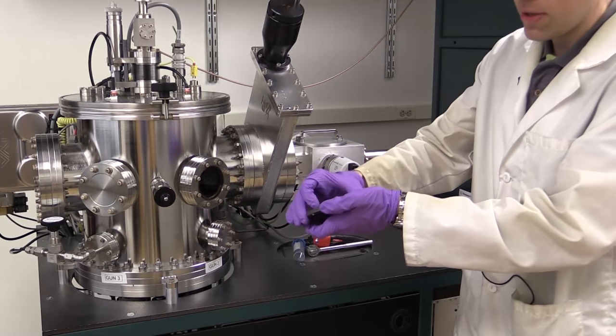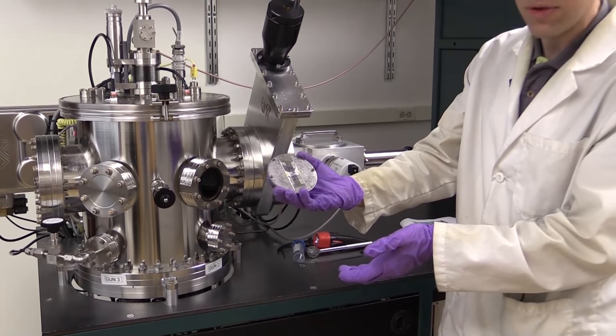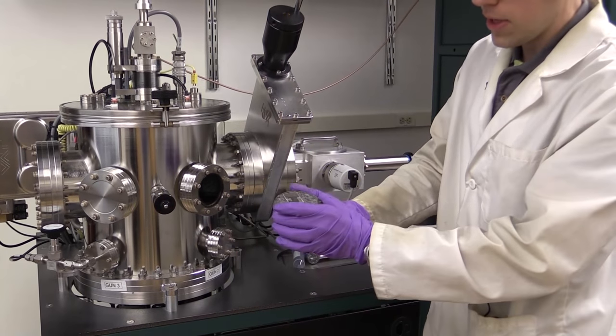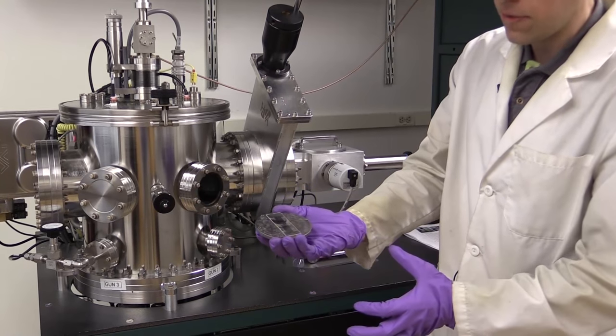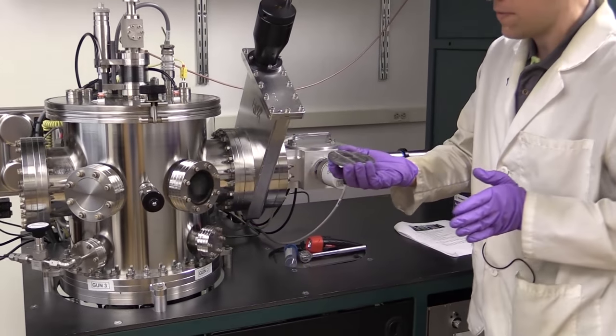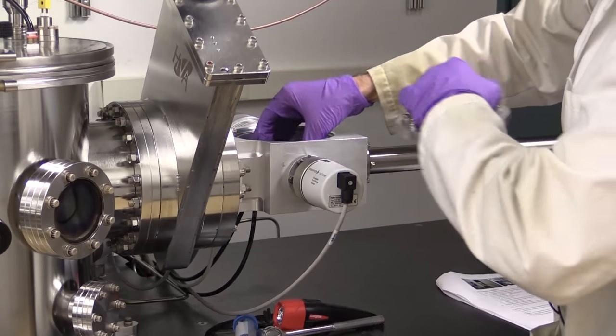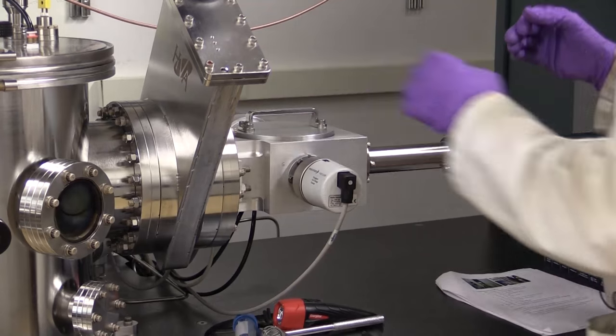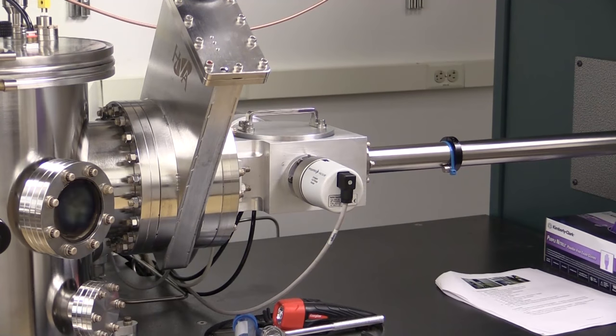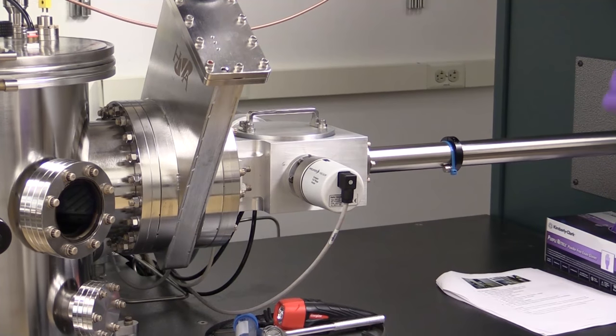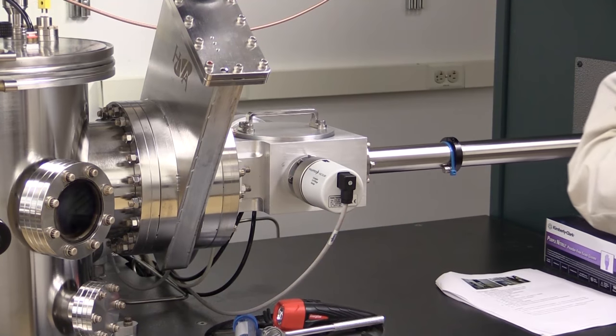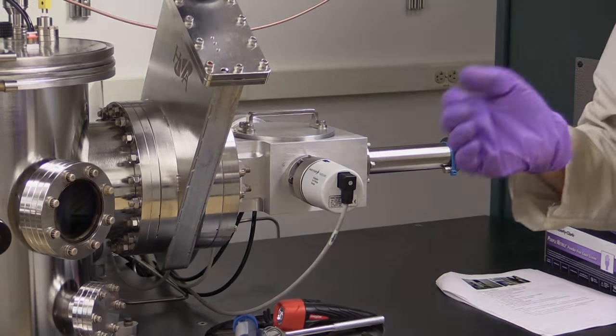At this point, I'll go ahead and load this substrate holder in the load lock chamber. I've got three screws on the front of my substrate holder that will face the gate valve. Now I will activate the load lock pumps. This is going to take about five minutes to get a vacuum, so we can take a short break.